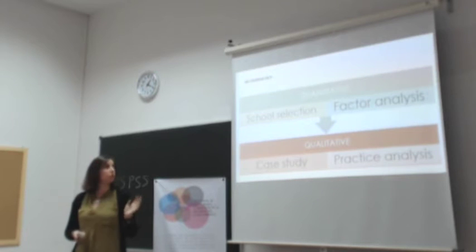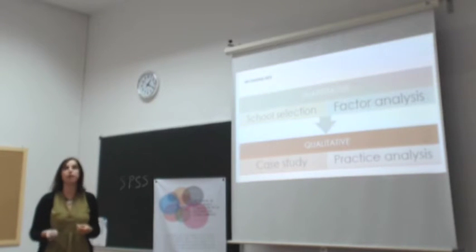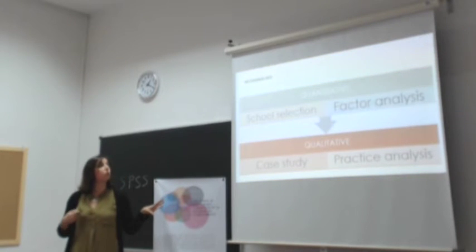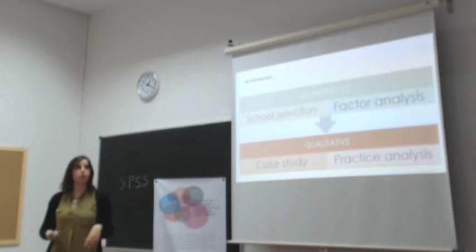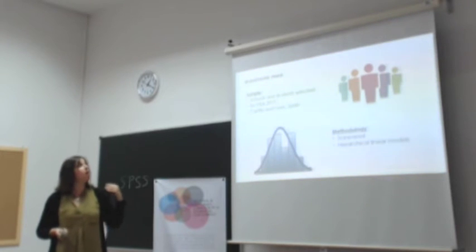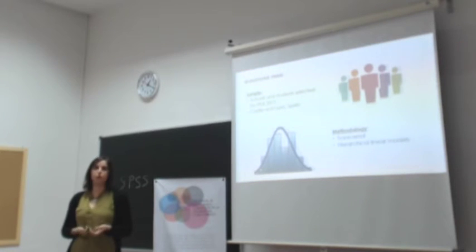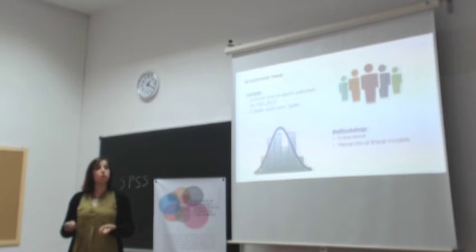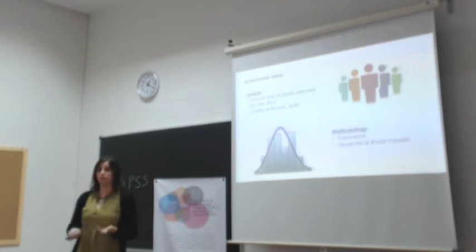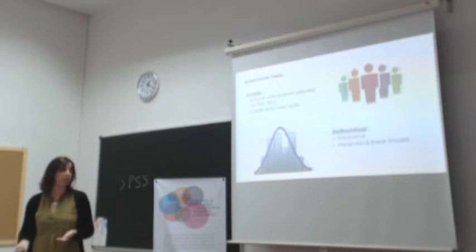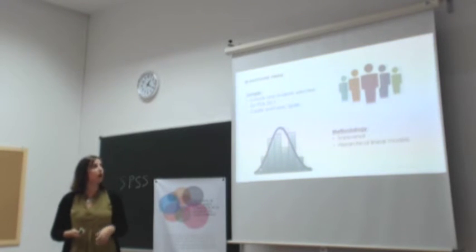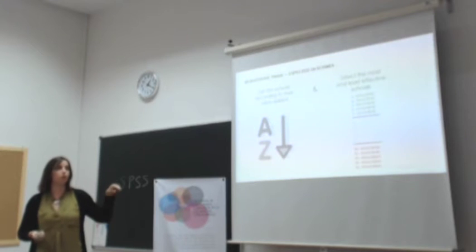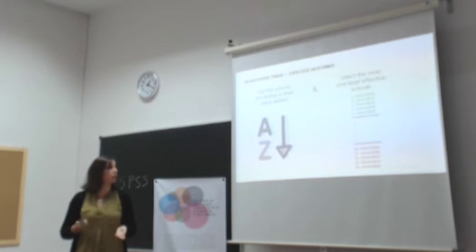Our study has two main phases. First, a quantitative phase in which we will select schools based on multi-level models, and then a qualitative phase with an in-depth study of those schools. For the quantitative phase, our sample will be the schools and students selected for the PISA 2015 report in Castilla y León, Spain. We will conduct a transversal study using hierarchical linear models, and from this phase we expect to sort schools according to their value-added and select the most and least effective schools.